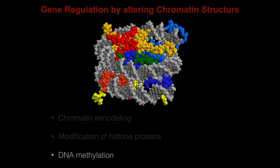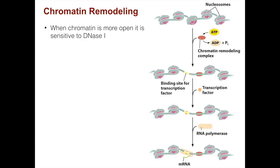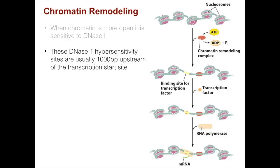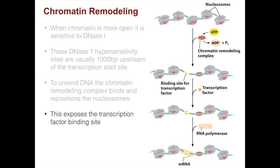The methylation state of the DNA is also important in gene regulation in eukaryotes. We've learned a lot about chromatin remodeling, in part because when chromatin is more open, it is sensitive to DNase 1. These DNase 1 hypersensitivity sites are usually 1,000 base pairs upstream of the transcription start site. To unwind DNA, the chromatin remodeling complex binds and repositions the nucleosomes, which exposes the transcription factor binding site.